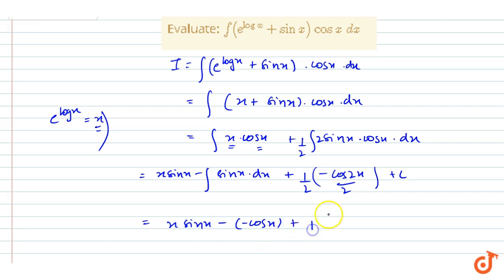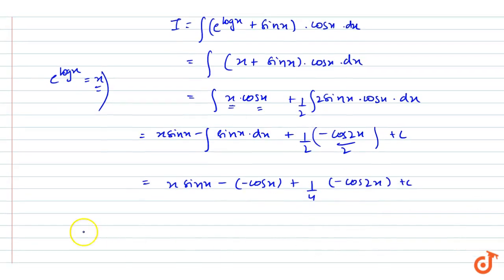Plus 1 by 4 minus cos 2x plus c. So our final answer is I equals to x sin x plus cos x minus 1 by 4 cos 2x plus c.